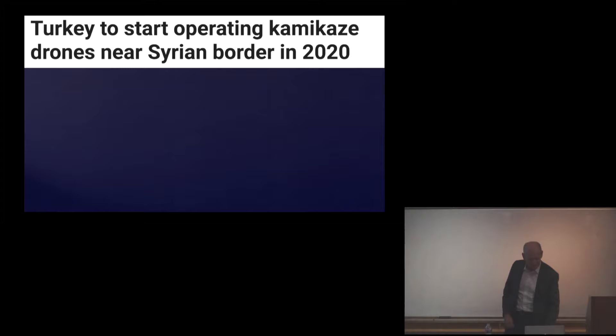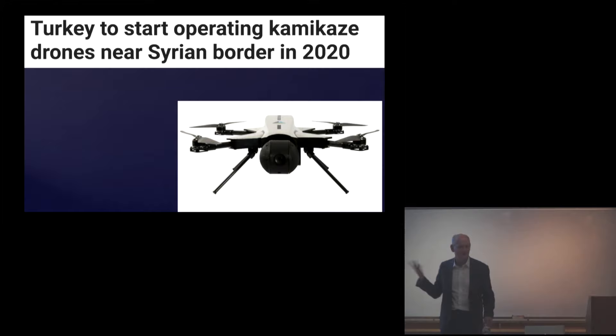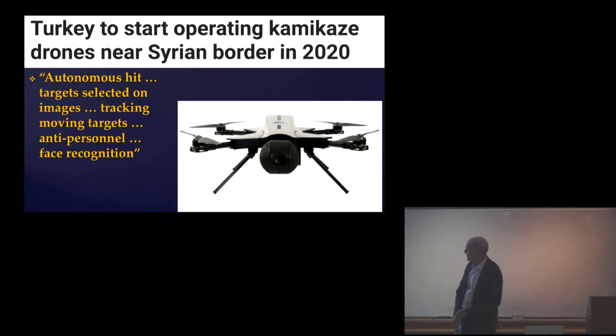When we brought that movie out in 2017, the Russian ambassador to the UN complained that this was just science fiction and this would not be even a thing for another 30 years. But now you can actually go and buy something that's actually a lot worse than the weapon we showed. The Turkish company STM is producing the Kargu drone. They advertise its capabilities: autonomous hit, target selected based on images, tracking moving targets, anti-personnel, and face recognition. And they have announced their intention to use it against the Kurds.